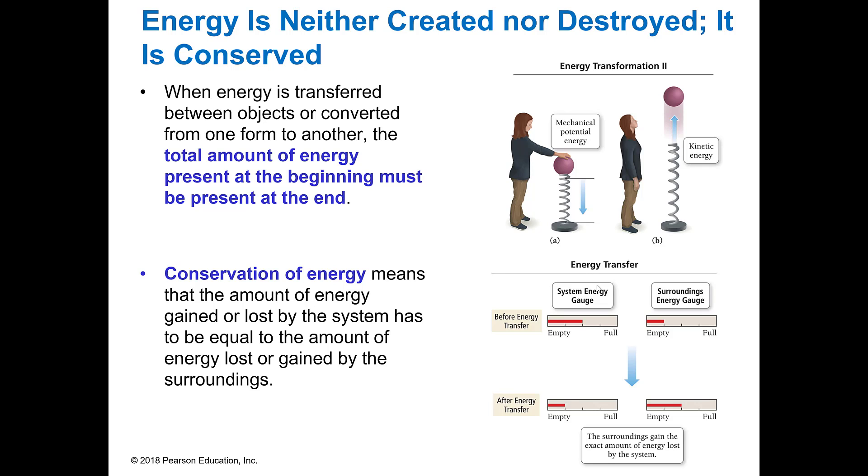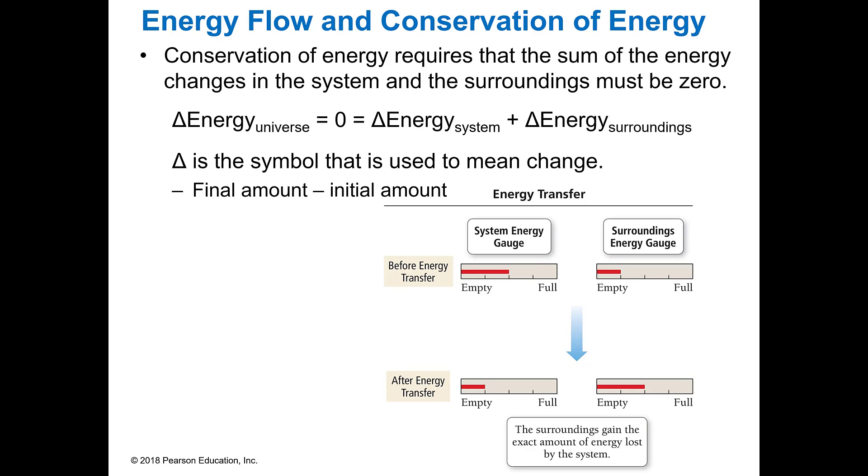So the law of conservation of matter says you can't create it, you can't destroy it. Whatever you start with, you've got to finish with. So whatever you gain or lose in the system is going to be oppositely gained or lost in the surroundings. So that gives us an overall change in energy, the delta energy of the universe, as a big fat zero. Because the energy of the system change and the energy of the surroundings change is going to equal zero. So change in energy of the universe is zero, and the change in energy of the system plus the change in energy of the surroundings also equals zero.